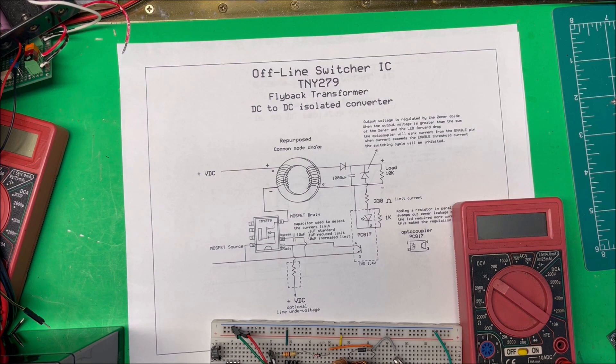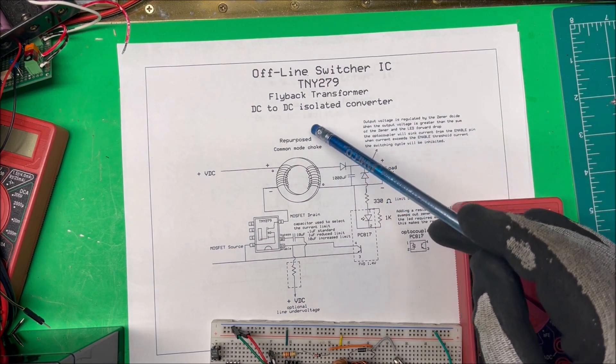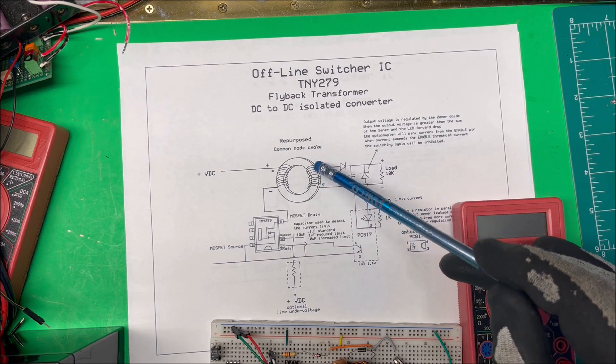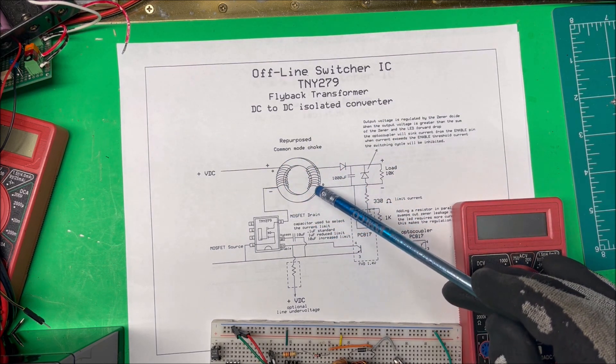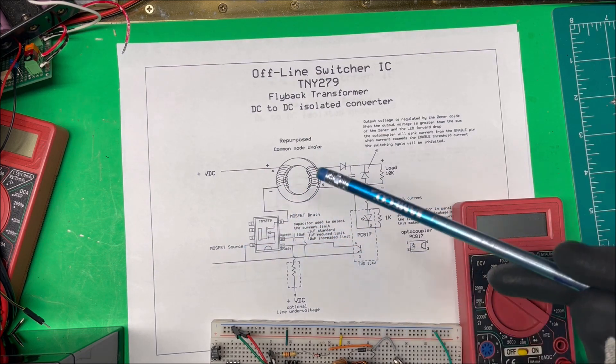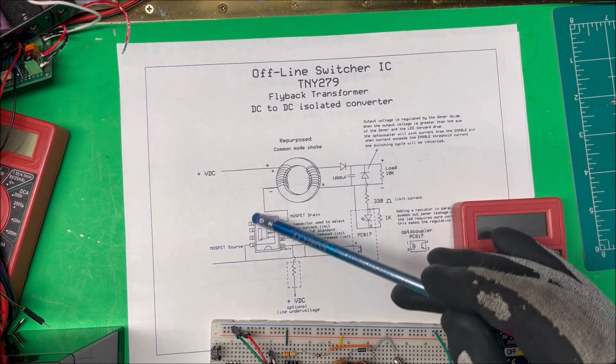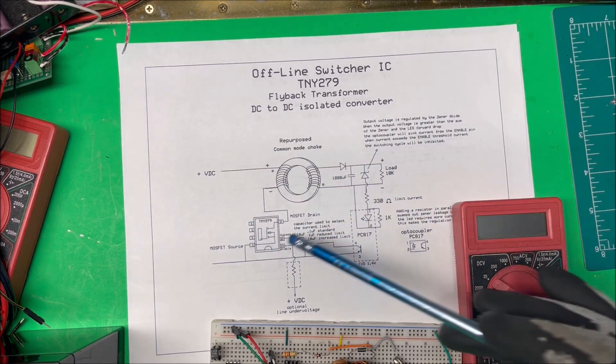In a previous video, I made a flyback transformer or DC to DC isolated converter out of a repurposed common mode choke, a MOSFET, and a PWM controller. Now this chip here is going to do all the work for us. It has a built-in MOSFET and an oscillator that can control the output voltage.